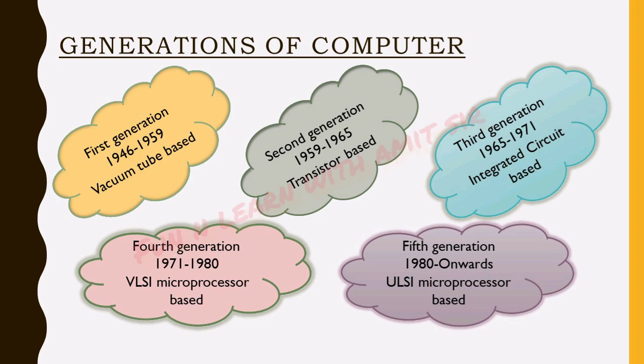The fourth generation of computers lies between 1971 and 1980. It used microprocessors where many ICs are integrated together, using technology called VLSI — Very Large-Scale Integration. The VLSI microprocessors are still used in our PCs. The fifth generation started developing from 1980 till now, using ULSI — Ultra-Large-Scale Integration — microprocessor-based technology.